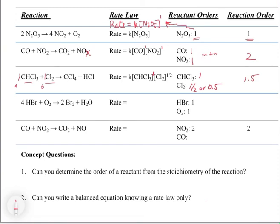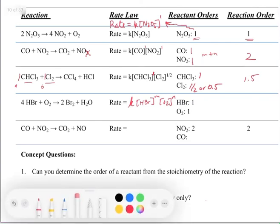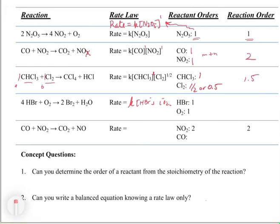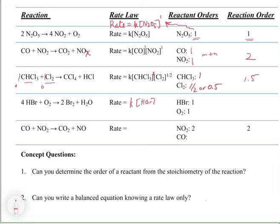For the HBr + O₂ example, we write the general rate equation first: rate = k[HBr]^M[O₂]^N. We're then told that HBr and O₂ are both first order. So we write: rate = k[HBr][O₂], leaving out the explicit 1 superscripts since they're implied. The overall reaction order is 1 + 1 = 2.